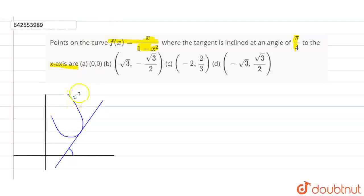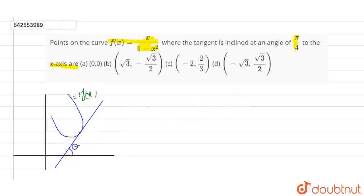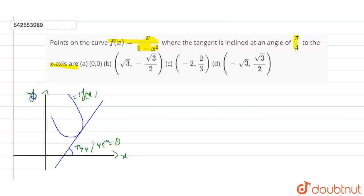So, if this is a curve, if this is our f(x), and this is a tangent drawn to this curve which is inclined at an angle of π/4. So this is π/4, or we can say 45 degrees or theta, and this is our positive x-axis and this is our y-axis. So what we have to do is find the values of these two points at which the interaction is happening between the curve and the tangent.